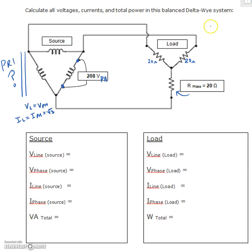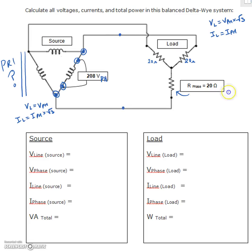For the Y connection, V_line equals V_phase times root 3, and the phase current and line current are identical. Looking at the delta source, V_line equals V_phase, so the voltage on the outside of the circuit equals the voltage on the inside — meaning the line voltage is 208 volts.